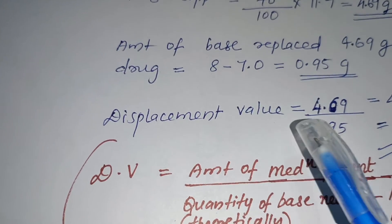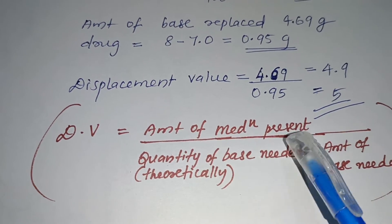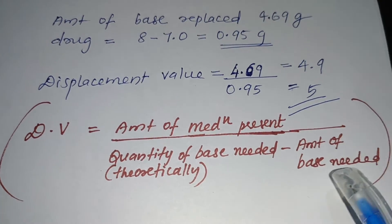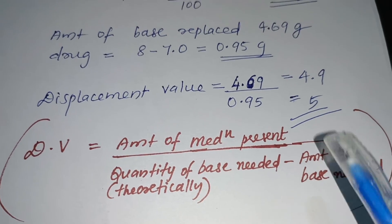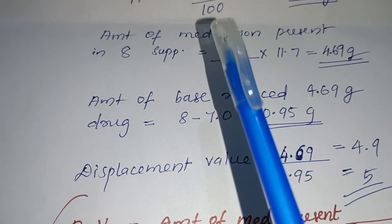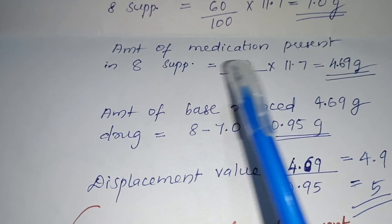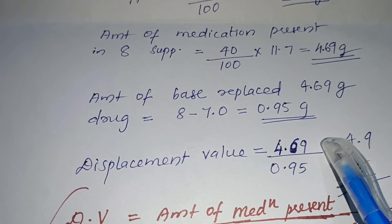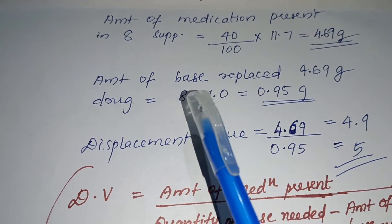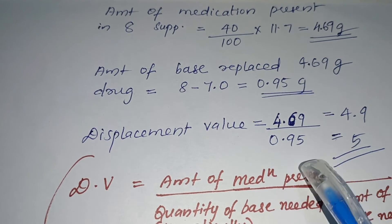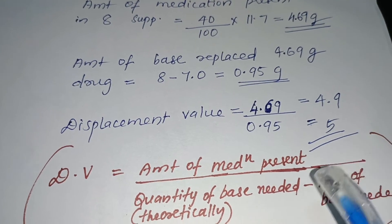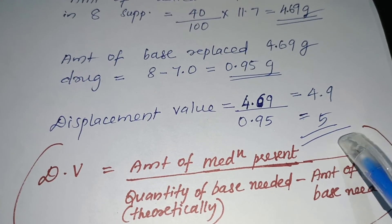The displacement value is calculated as: amount of medication present divided by the theoretical quantity of base minus actual amount of base needed. That is 4.69 gram divided by the amount of base displaced, which is 8 minus 7 equal to 0.95 gram. So the displacement value is approximately 5.